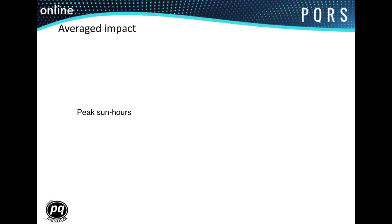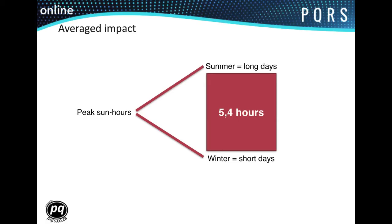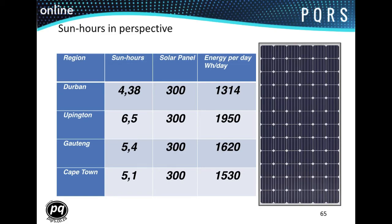The peak sun hour value takes the long summer days and the short winter days into consideration, and the average is taken over a period of a year — resulting in Johannesburg having 5.4 peak sun hours per day based on a rate of 1000 watts per meter squared when all days throughout the year have been averaged. We are able to take the power output of the solar panel and multiply it by the peak sun hours for the respective region in order to derive the amount of energy being produced per day.